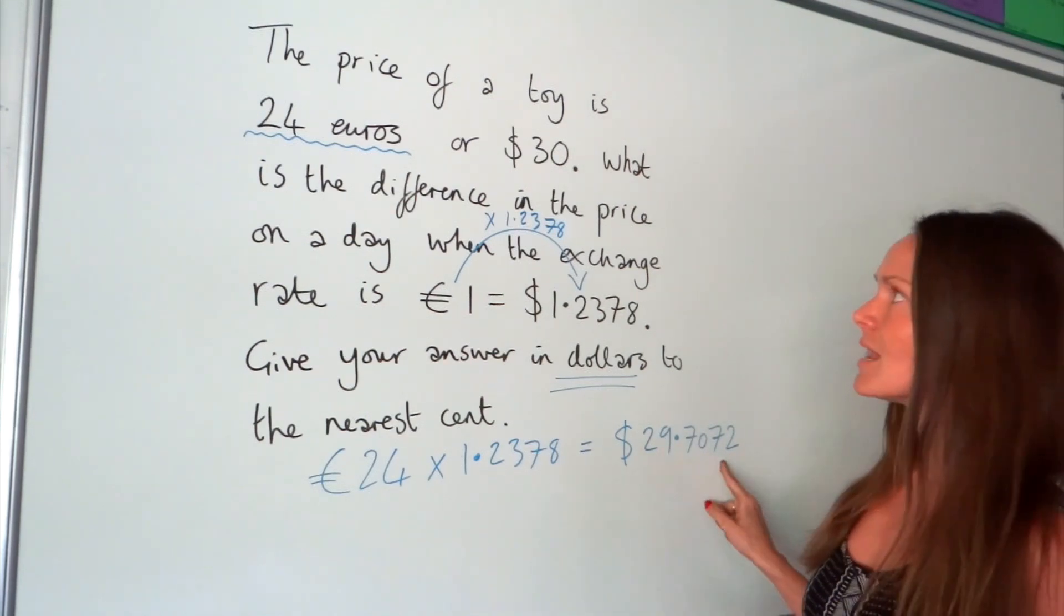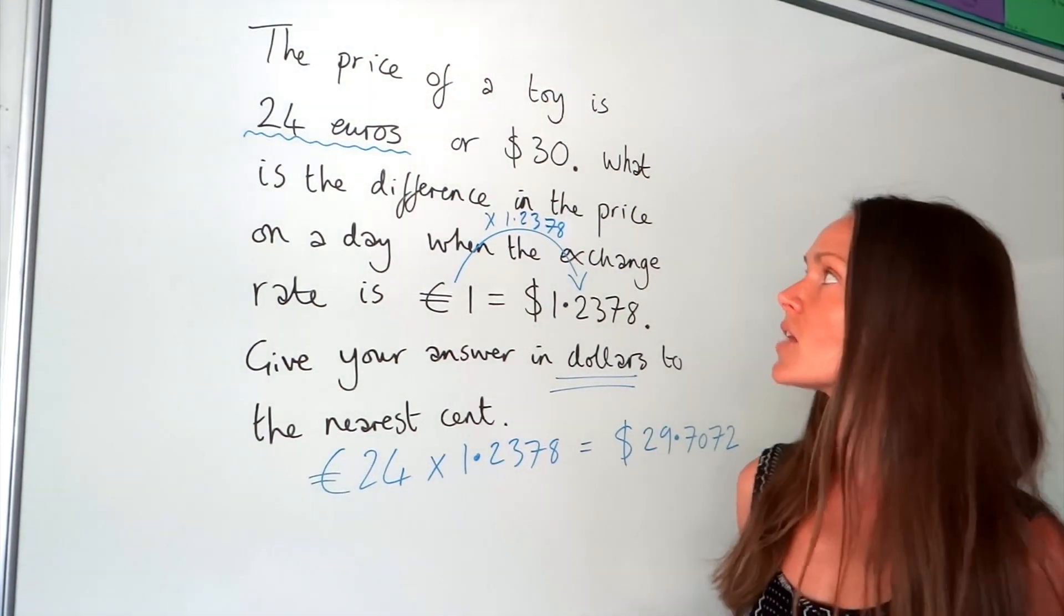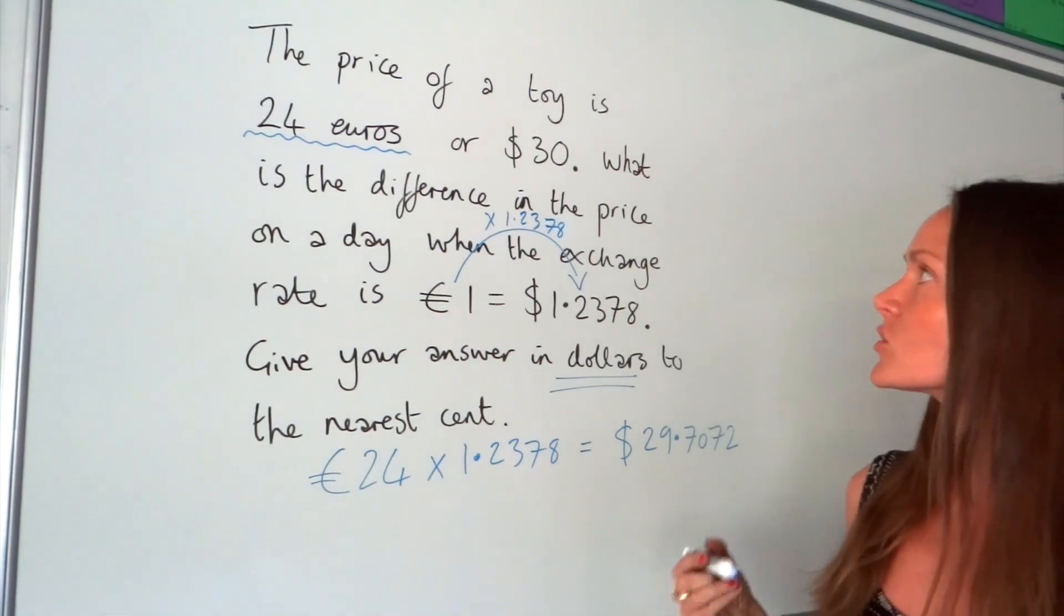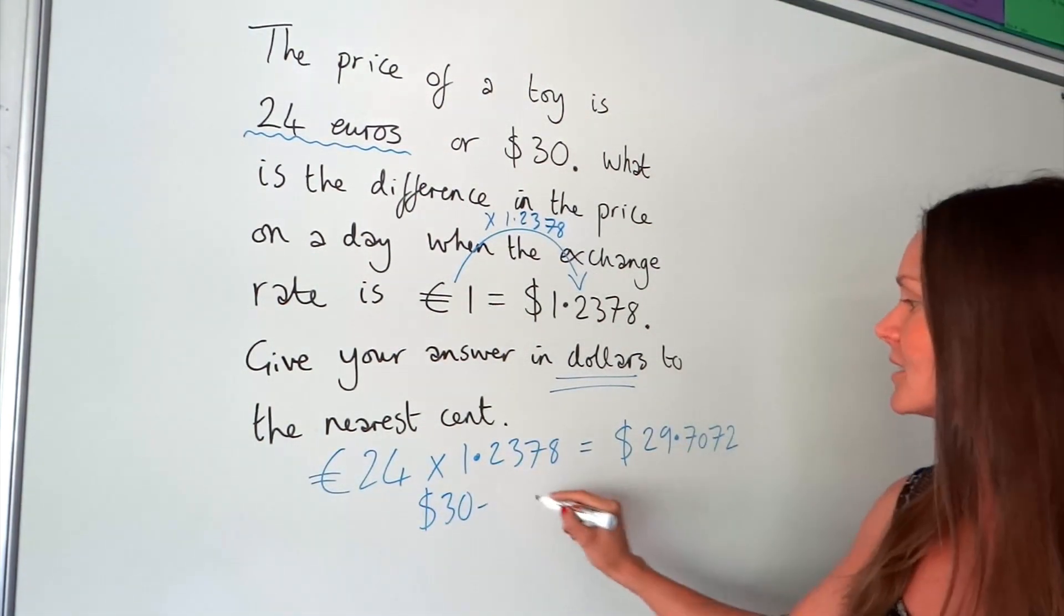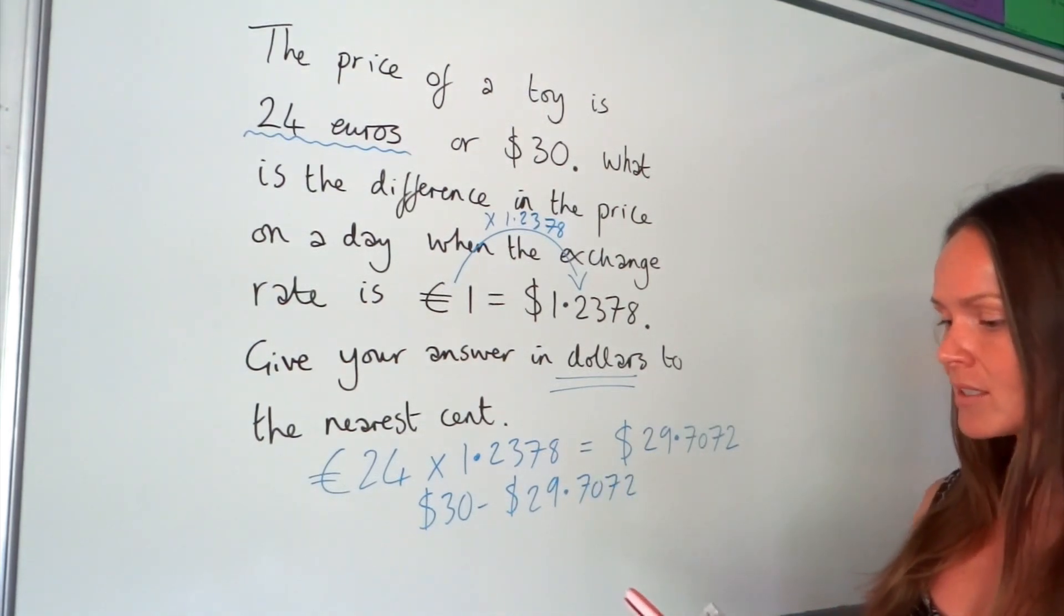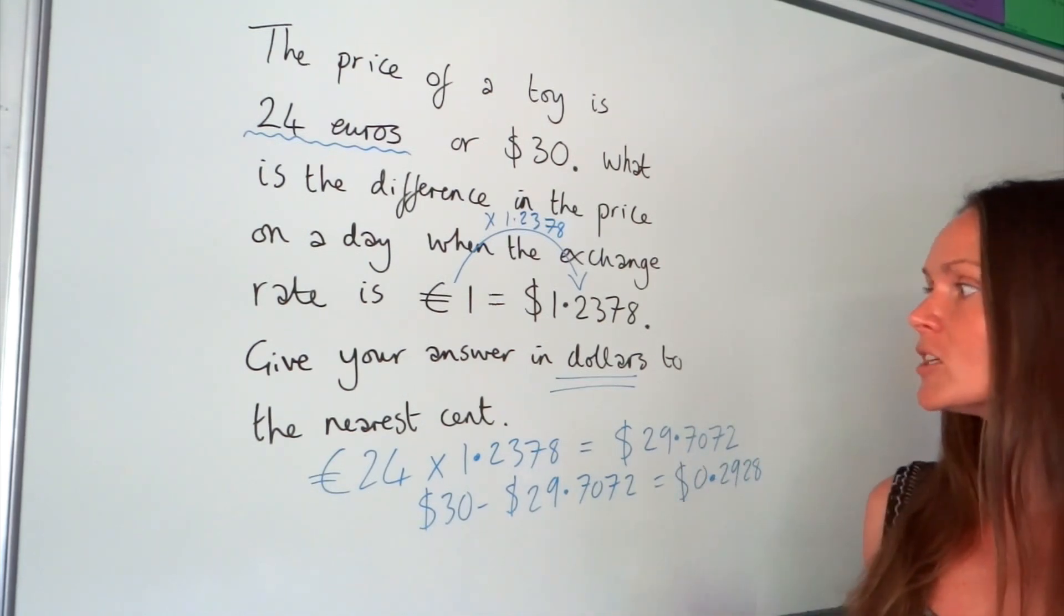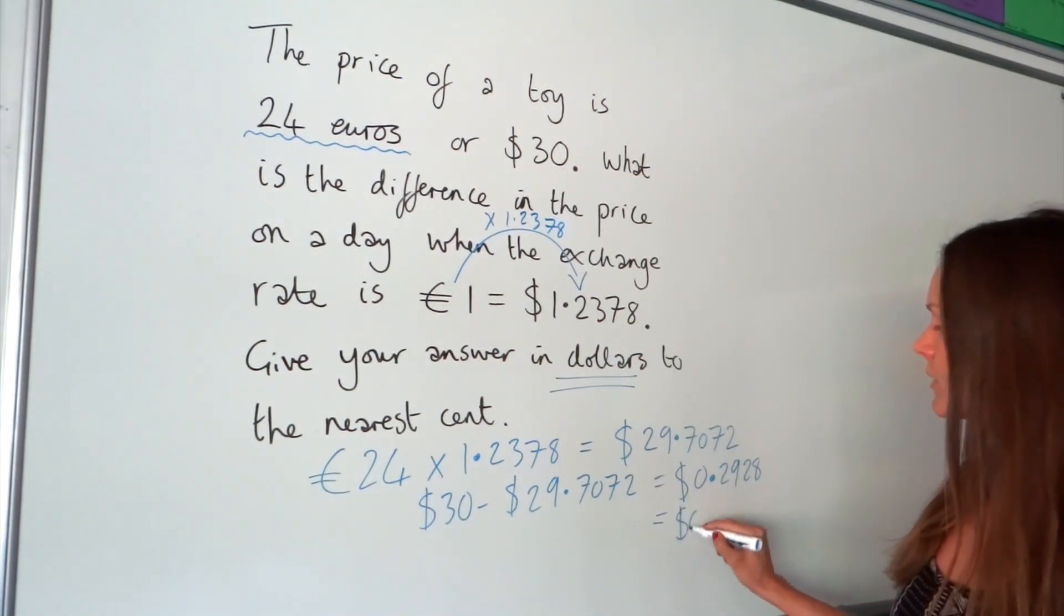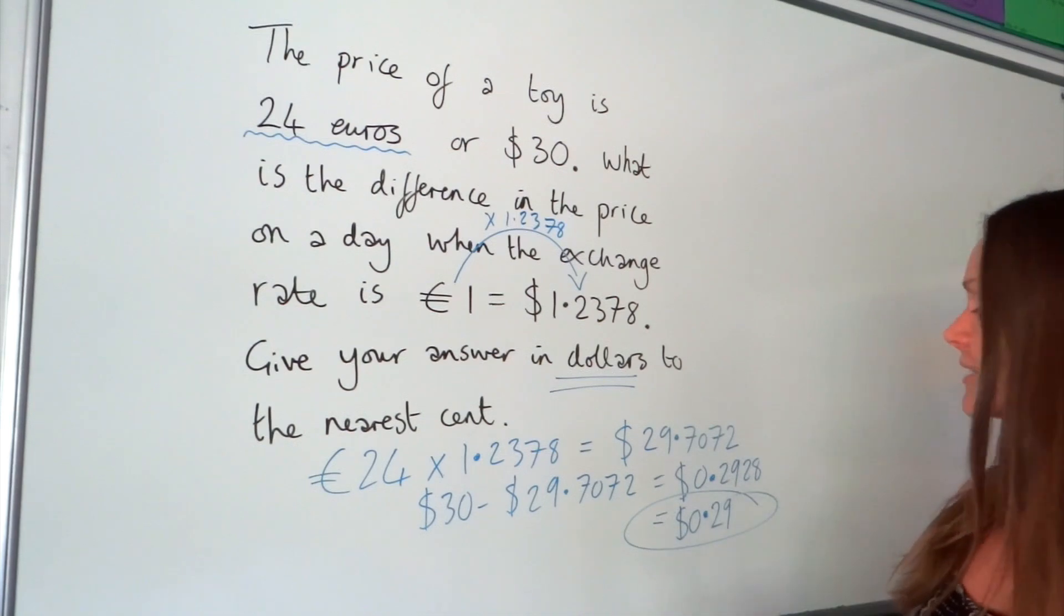We can already see that this is less than that $30, so it's actually cheaper to pay in euros than in dollars. The question says, what's the difference in the price? Don't forget to find the difference. We're going to subtract. We're going to do 30 minus our answer that we've just worked out. When I do that, I get 0.2928. Just be careful because we haven't finished. It does say give your answer to the nearest cent, which means to two decimal places, which would leave us with just $0.29 because this 2 doesn't round that 9 up. That is the difference in price.